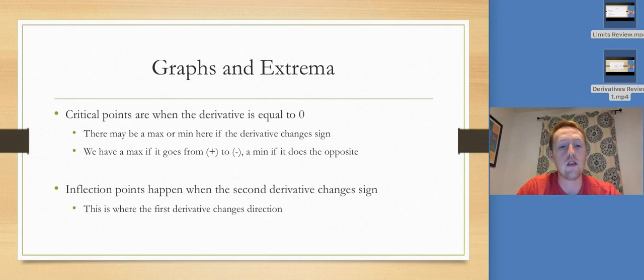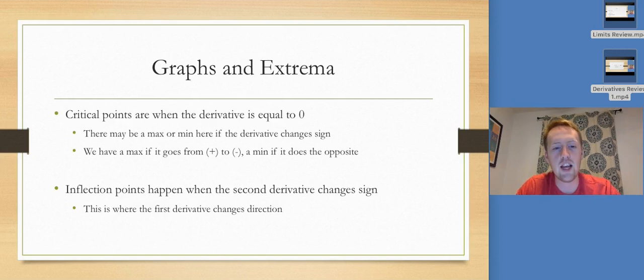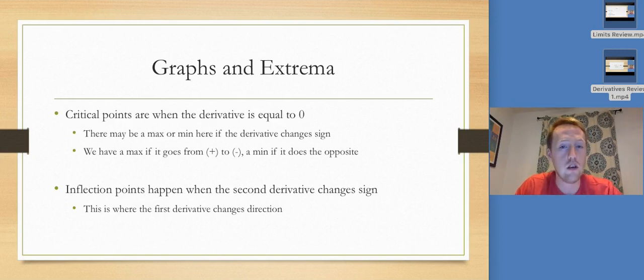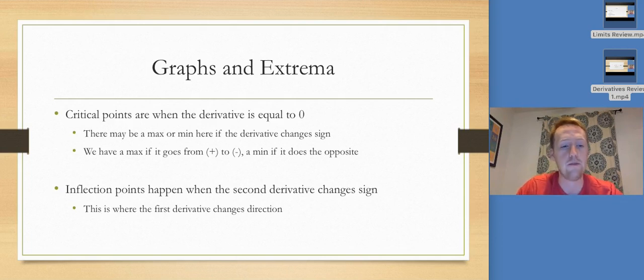Inflection points happen when the second derivative changes sign. With similar reasoning, if the first derivative changes direction, then the original function will have an inflection point — it'll change concavity.